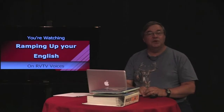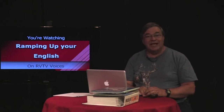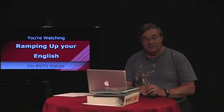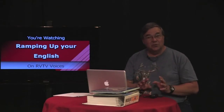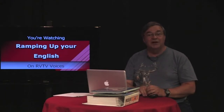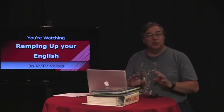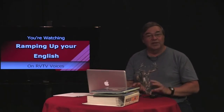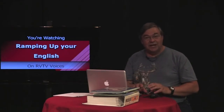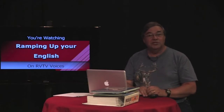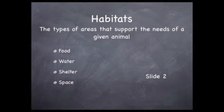In episode 51, we looked at the habitats of three North American mammals. Habitats are the types of areas that support the needs of a given animal. In this episode, we're also going to explore the meaning of biomes. Just as an animal's range and its habitat are often related, the habitat of an animal has a lot to do with the biome in which the animal is found. Let's start with a review of habitat. A habitat is an area that provides for the needs of an animal. Those needs are food, water, shelter, and space.